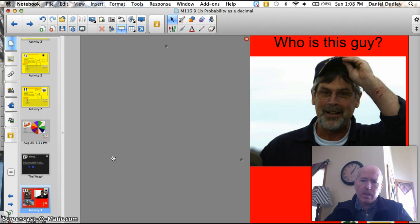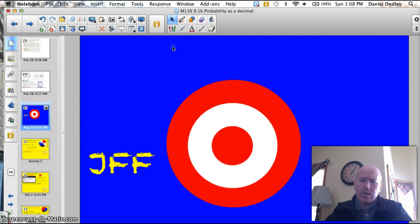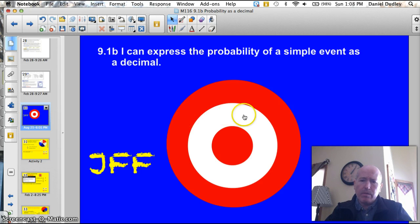Our trivia question tonight is, who is this guy? I don't think you know who he is, but you know all about him. Many of you have seen a movie, that's your clue. Let's get to the official target for tonight. 9.1b. I can express the probability of a simple event as a decimal. Let's do this thing.